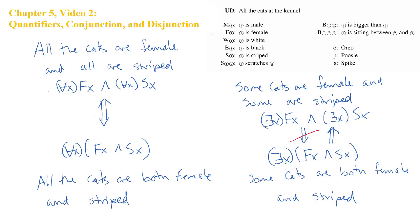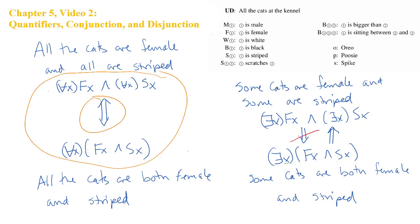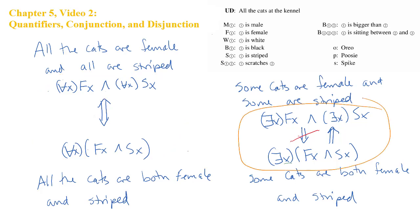That doesn't make a difference with the universal, because if all of them are female and all of them are striped, then all of them are both female and striped. The scope interaction between conjunction and universal is different from that between conjunction and existential. What this shows is that the universal quantifier can distribute across conjunction and maintain equivalence, but the existential quantifier does not distribute across conjunction to maintain equivalence — though there is still this implication.